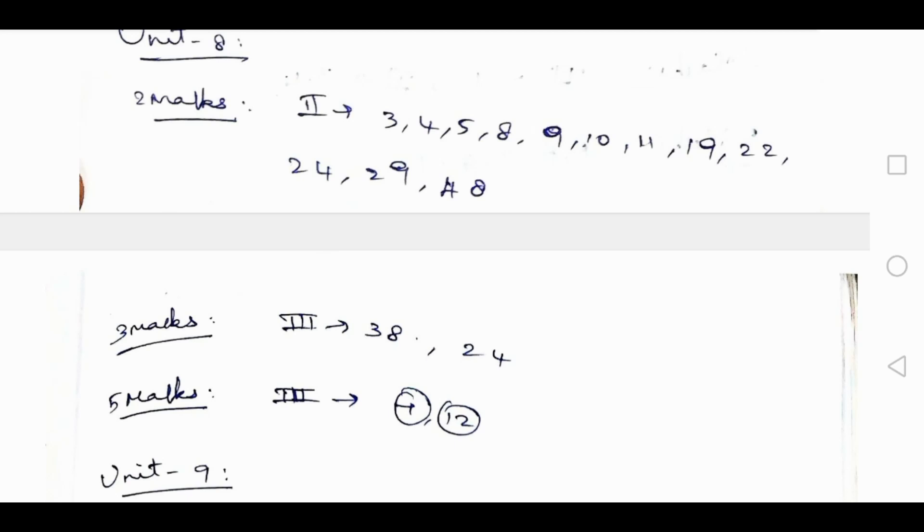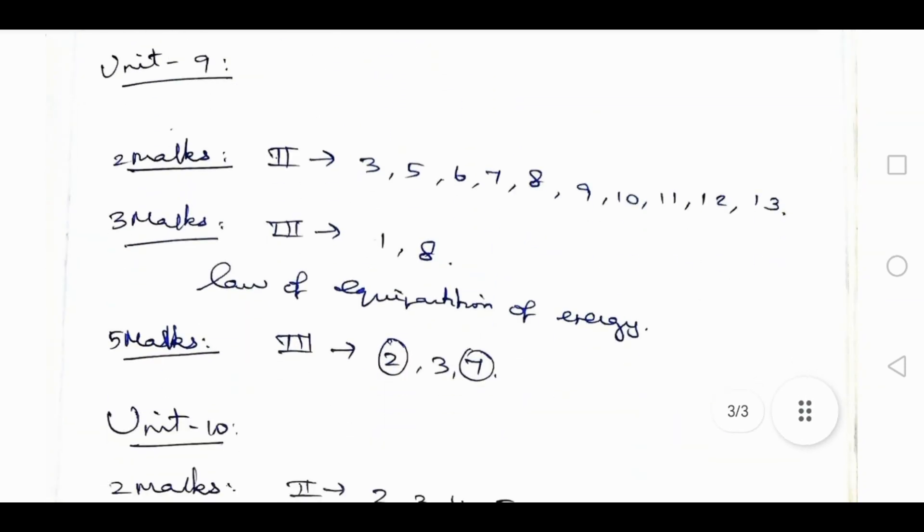Unit 9: 2 mark up to 2nd rom later 3, 5, 6, 7, 8, 9, 10, 11, 12, 13. 3 mark up to 3rd rom later 1 and 8.